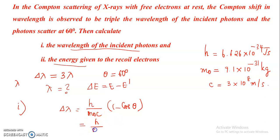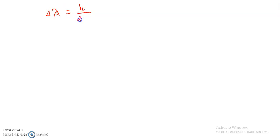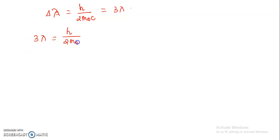Substituting into the formula: delta lambda equals H divided by M₀C multiplied by (1 minus 1/2), which equals H divided by 2M₀C. Since delta lambda equals 3 lambda, we have 3 lambda equals H divided by 2M₀C, which implies lambda equals H divided by 6M₀C.